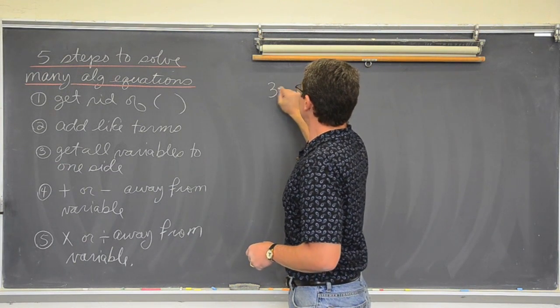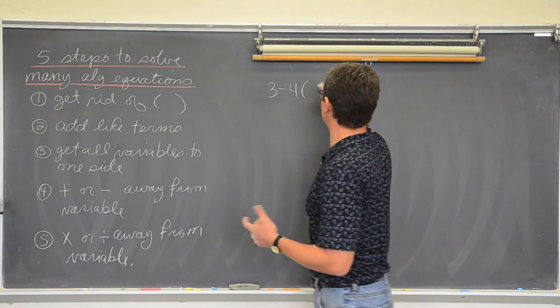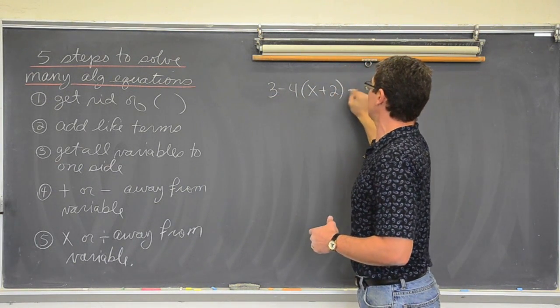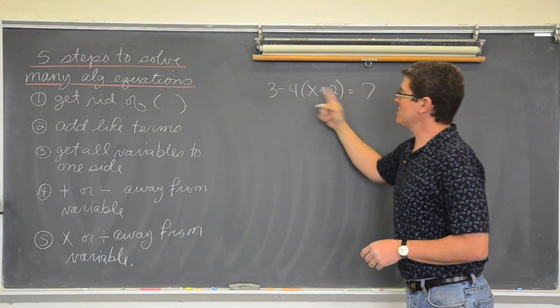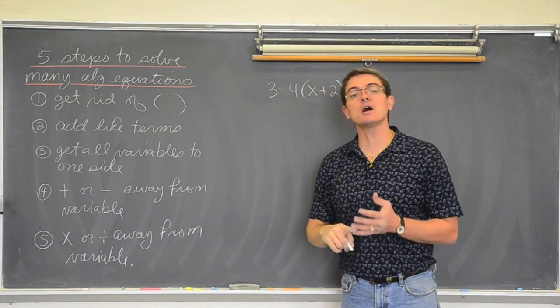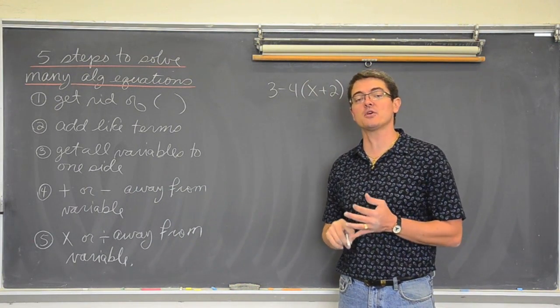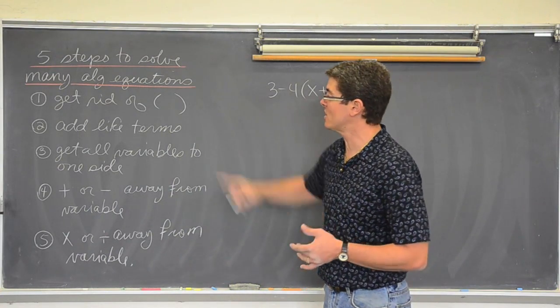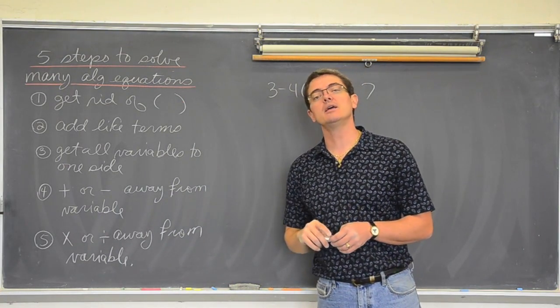First of all, we are going to have 3 minus 4 times x plus 2 equals 7. This equation has parenthesis in it. You are not going to be able to solve for a variable if those parenthesis are in the equation. So step 1, if you have them, get rid of them.